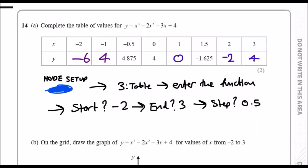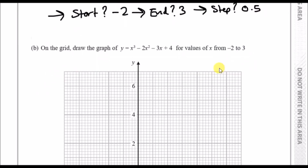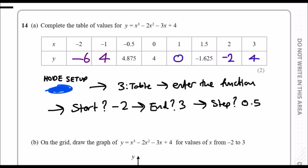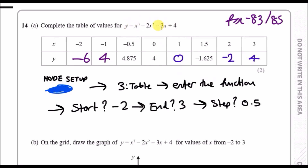Number 14. I've already gone ahead and done part a. There's actually a really easy way to complete the table values for an equation if you're using a Casio calculator — I'd recommend the fx-83 or fx-85 model. Press the mode/setup button and press number 3 which is the table, then enter the function using the alpha key so you can type x. So you'd enter x cubed minus 2x squared and so on. If you're not sure how to do that, let me know and I'll try to create a video on that.